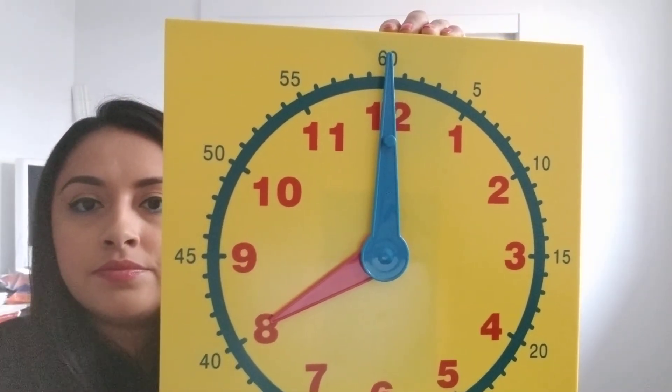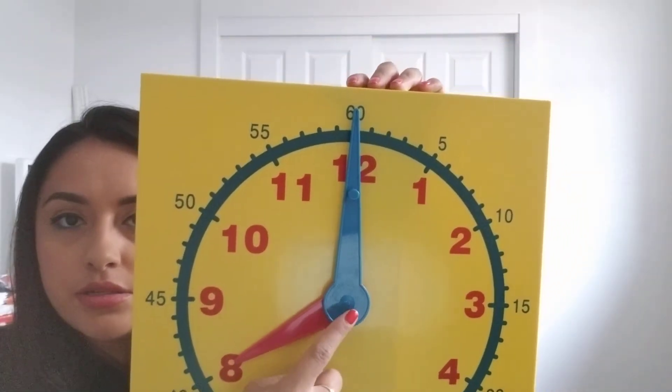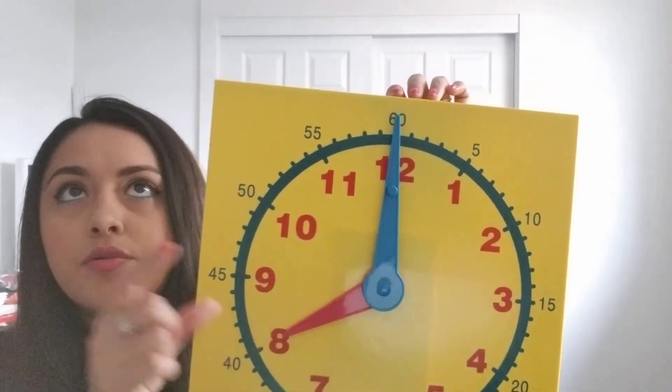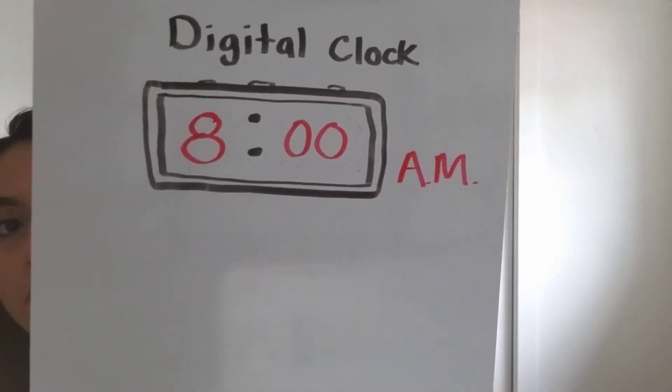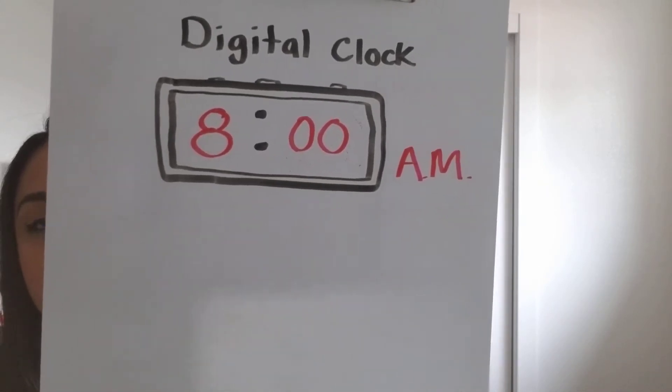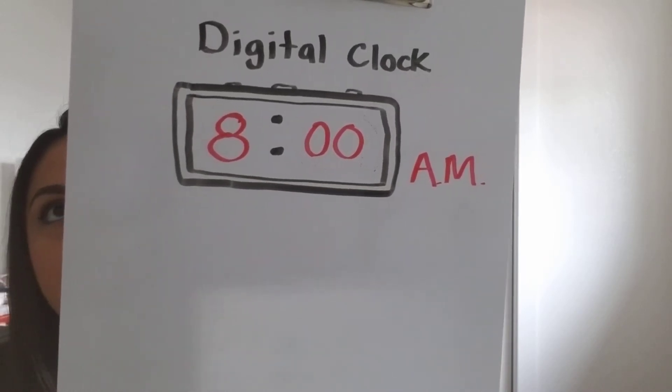You're going to look at it and see it's eight o'clock because the minute hand is on zero. Then you're going to read the sentence, and the sentence will say 'I went to school.' So at eight o'clock you went to school — does that mean it's the morning or the night, a.m. or p.m.? We know that we go to school in the morning, so it is a.m. You write eight a.m. because if it were 8 p.m., it would be almost bedtime — way too late for school.